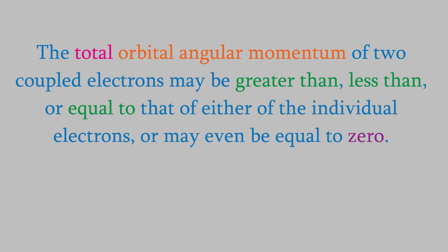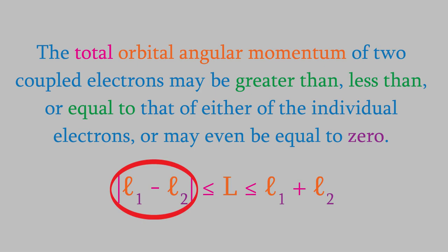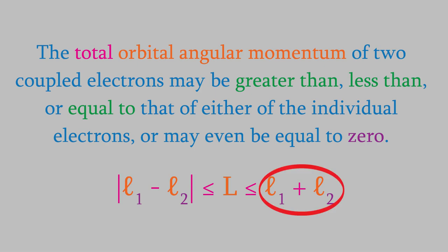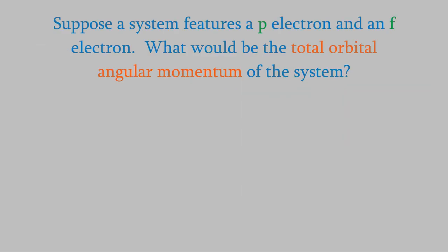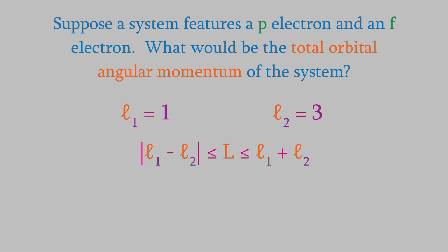When two orbital angular momenta couple, the overall momentum will be somewhere in a range. The lower limit is the absolute value of the difference between the two individual momenta, and the upper limit is the sum. The overall orbital angular momentum has the symbol capital L. For example, suppose our system includes a p electron and an f electron. A p electron has an l value of 1, and an f electron has an l of 3. Plugging those values into the equation shows that capital L can have values of 2, 3, or 4.